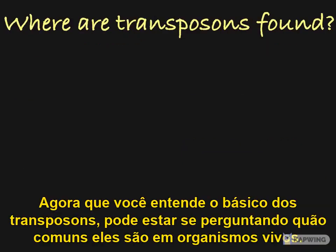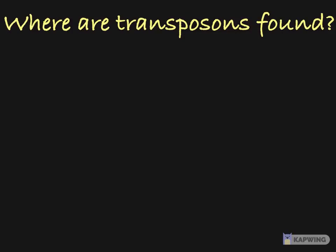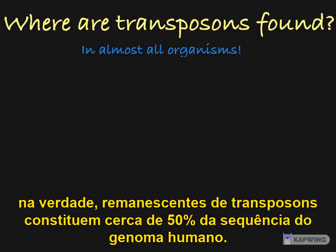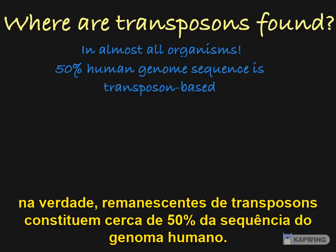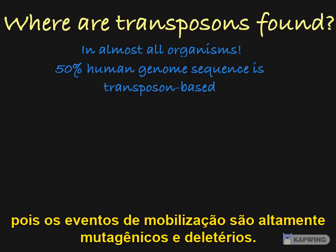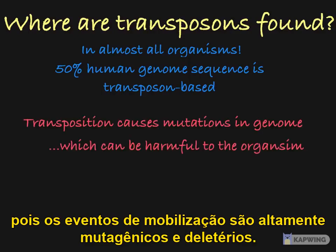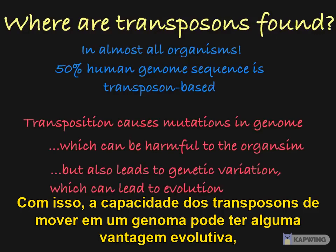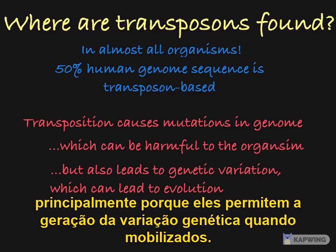Now that you understand the basics of transposons, you may be wondering how common they are in living organisms. Transposons are found in almost all living organisms. In fact, remnants of transposons make up around 50% of the human genome sequence. As you can imagine, the evolutionary pressure to silence active transposons in any cell is immense, as mobilization events are highly mutagenic and deleterious. That being said, their ability to move around a genome might have some evolutionary advantage, mainly because they allow for genetic variation when mobilized.